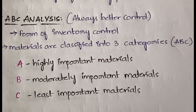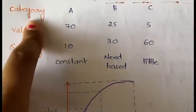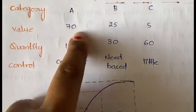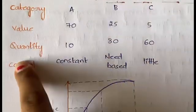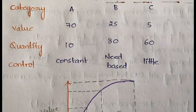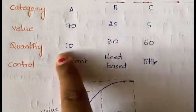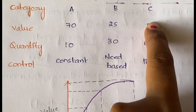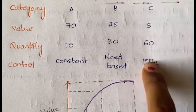Now let's look at a table for more clarity. The categories are A, B, and C — highly important, moderately important, and least important. The value of A is 70%, B is 25%, and C is 5%. The quantity needed is 10 units for A, 30 units for B, and 60 units for C. So C requires more quantity but has less value.